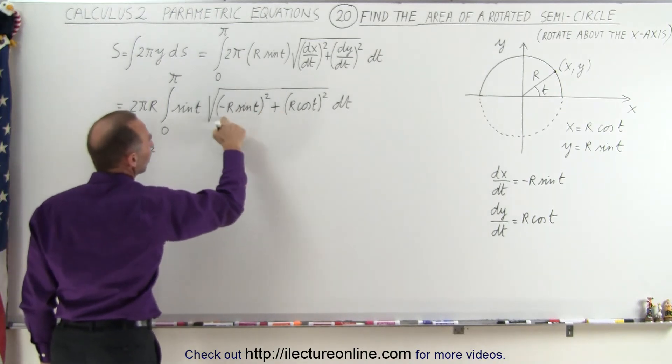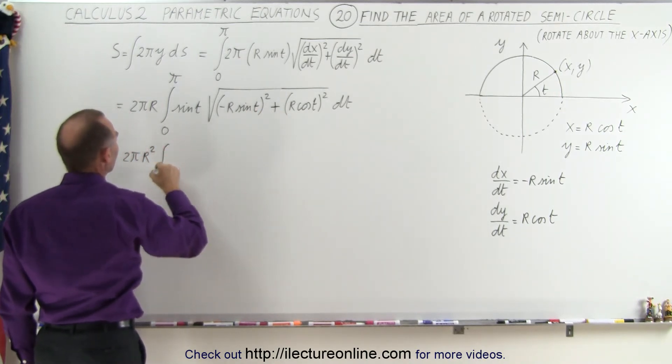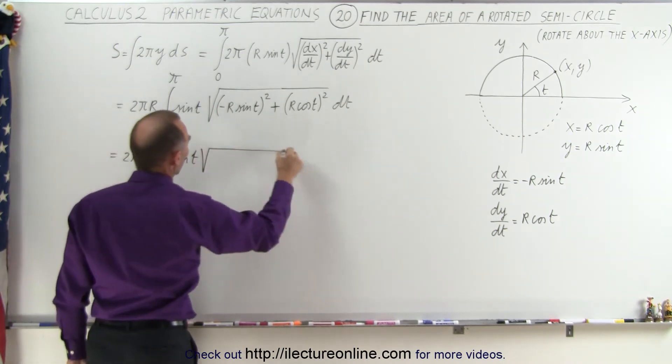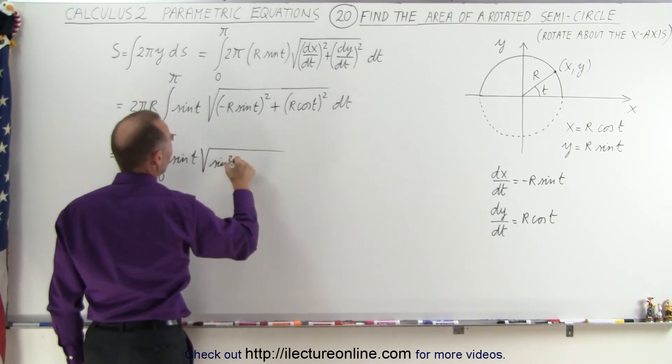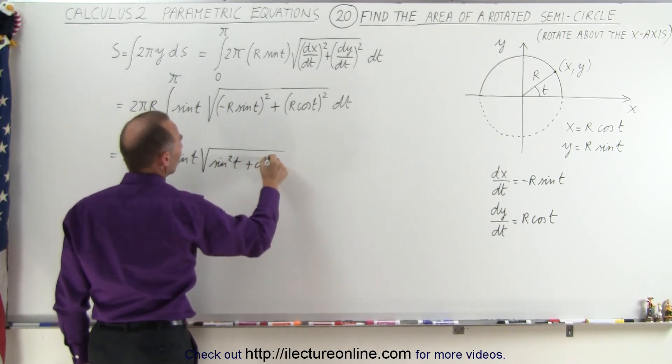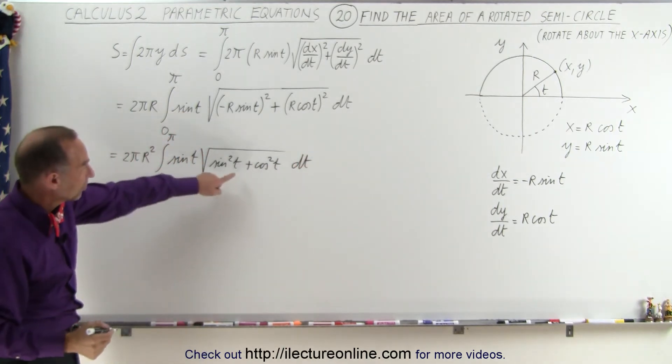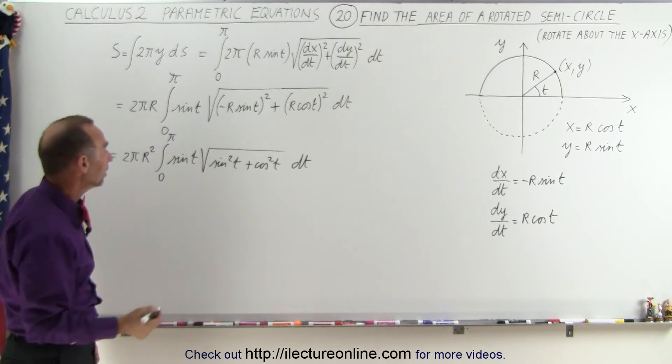That comes from these two r's when they're squared, times the integral from 0 to π of sine of t times the square root of sine² t plus cosine² t, and then the whole thing times dt. And then of course you can see that this is equal to 1. So the square root of 1 is 1.